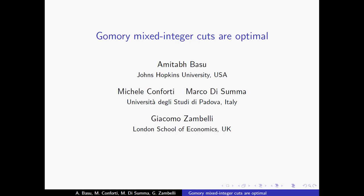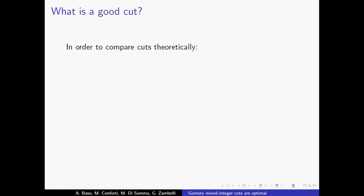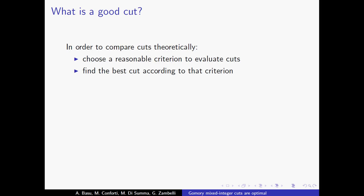In the first step, we need to decide how to compare cuts. The first thing is to choose a reasonable criterion to evaluate and compare cuts one to the other, in order to say that one cut is better than another. This is already a non-trivial step. After you fix such a criterion, the problem is how to find the best cut from a theoretical point of view according to that criterion.